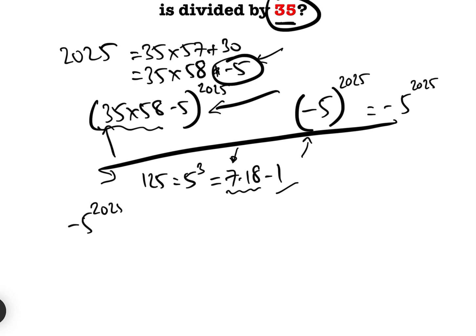So let's have a look. Minus 5 to the 2025. Well let's leave a 5 out. Now in actual fact, because 125 is 5 cubed, we are going to have to leave 5 cubed outside, which gives us 5 to the 2022, which also can be written as 5 cubed times 5 cubed to the 674.